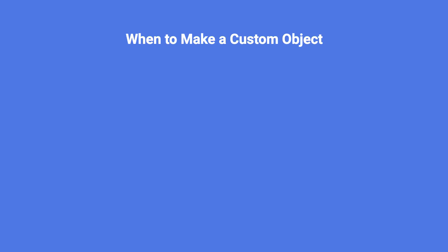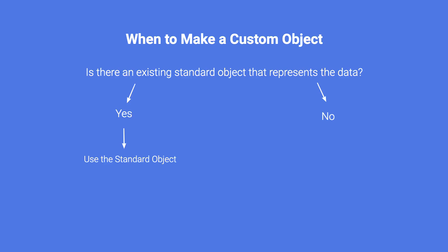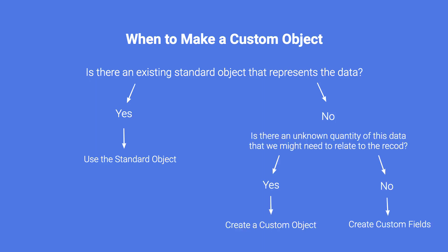The short answer is you're going to want to make a custom object if a standard object isn't a good fit, if it won't represent your data very well, or if custom fields aren't a good fit either — because maybe that data isn't directly related to a standard object, or there's an uncertain quantity of that custom object that we might need to relate to a standard record.